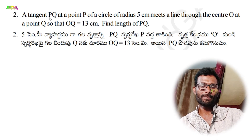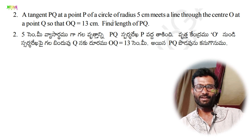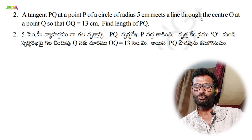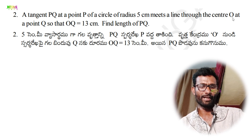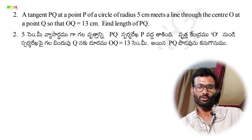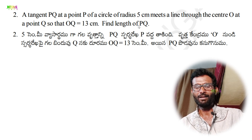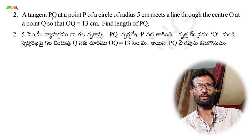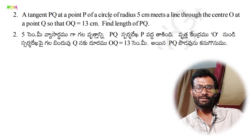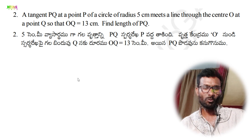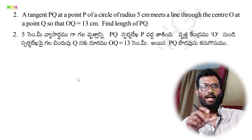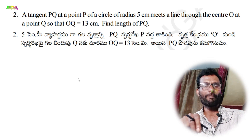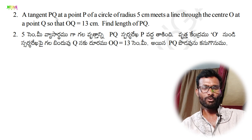Question number 2: a tangent PQ at a point P of a circle of radius 5 centimeters meets a line through center O at a point Q, such that OQ equals 13 centimeters. Find the length of PQ. PQ is a tangent at point P on the circle.